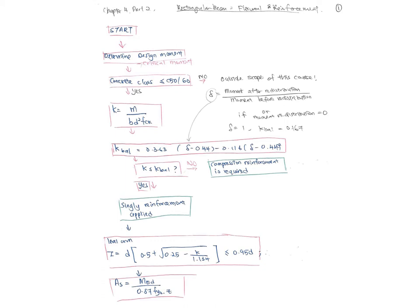We start with the rectangular beam for flexural reinforcement — the steps are the same for flanged beams but the formula involved is different. First, determine the design moment and take the critical moments. Then classify the concrete class: if fck ≤ C50/60 we proceed; otherwise it's outside this course. Calculate k = M / (b·d²·fck), and calculate k_balance using the given equations. If there is no redistribution, sigma = 1 and k_balance = 0.167.